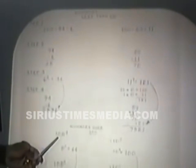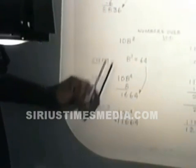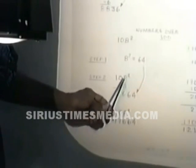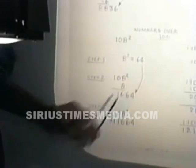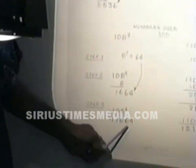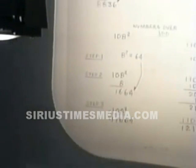Now we're going to numbers over 100. What is the square of 108? Step 1: square the 8, which gives 64. Step 2: since we're doing numbers over 100, we add the 8 to 108 and get 16. We place the 64 next to the 16, giving us 1664.